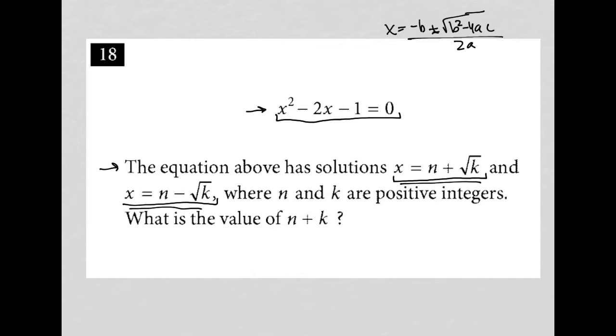For this equation, a equals 1 because there's no coefficient in front of x squared. b equals negative 2, the coefficient in front of x. And c equals negative 1, our constant term.